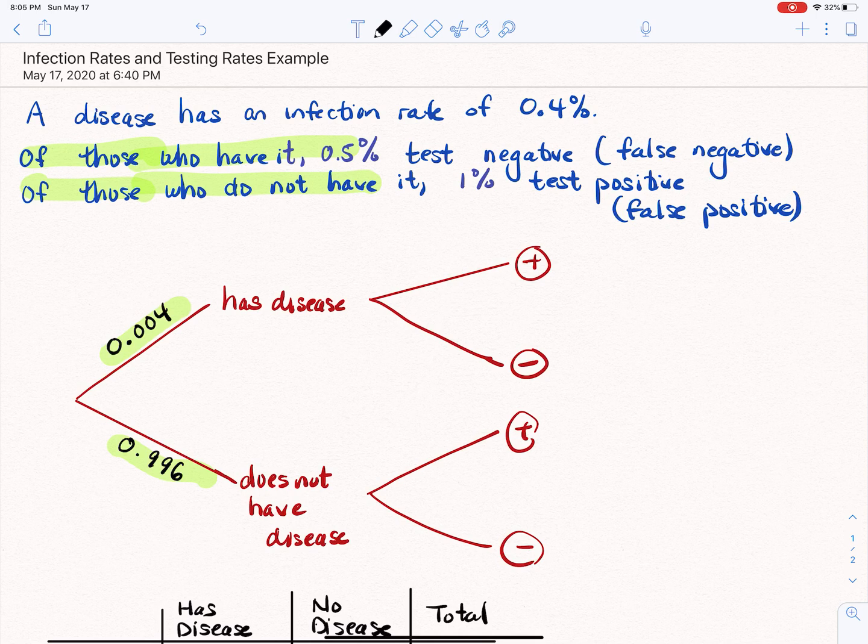So now let's move over to if they have the disease. So if they have the disease, we know that 0.5% test negative. So that means right here we have a 0.005. They have the disease, but they still test negative, which means if they have the disease, that means that 0.995, or 99.5%, test positive.